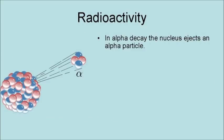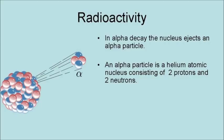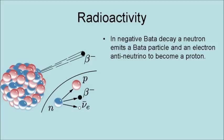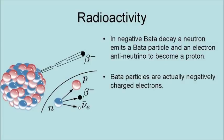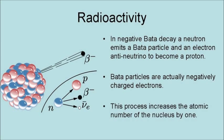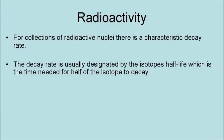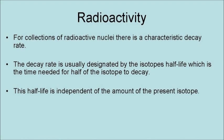In alpha decay, the nucleus ejects an alpha particle — a helium atomic nucleus consisting of two protons and two neutrons. This process reduces the atomic number of the atom by two, changing the element. In negative beta decay, a neutron emits a beta particle and an electron anti-neutrino to become a proton. Beta particles are actually negatively charged electrons. This process increases the atomic number of the nucleus by one, turning it into a different element. For collections of radioactive nuclei, there is a characteristic decay rate, usually designated by the isotope's half-life — the time needed for half of the isotope to decay. This half-life is independent of the amount of the parent isotope.